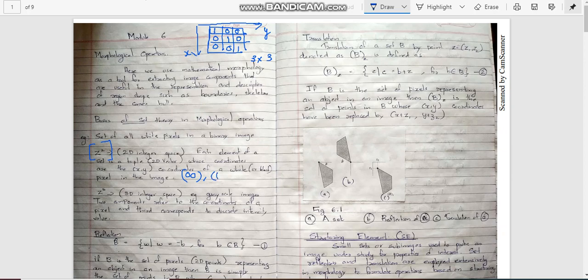Then 1, 1. Then 2, 2. This is two-dimensional integer space. We are only representing the points where white grey level values are present. Each element of a set is a tuple. It is a 2D vector whose coordinates are the x, y coordinates of a white pixel in the image.